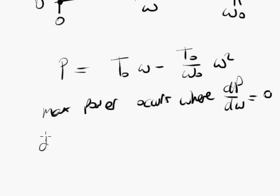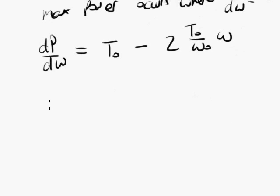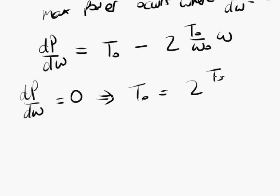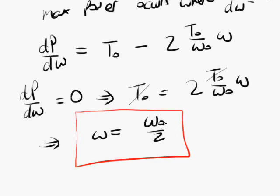we do a little bit of calculus. The maximum power will occur where dP d omega equals 0. So let's do that. Let's differentiate power with respect to angular velocity. We differentiate the T0 omega term. We get T0. We differentiate the quadratic bit of it. We are going to get 2T0 over omega 0 omega. We set that to 0 to find the maximum. And we find that T0 equals 2T0 over omega 0 omega. The T0s will cancel out of that equation. Rearrange it a bit and we find omega equals omega 0 over 2.